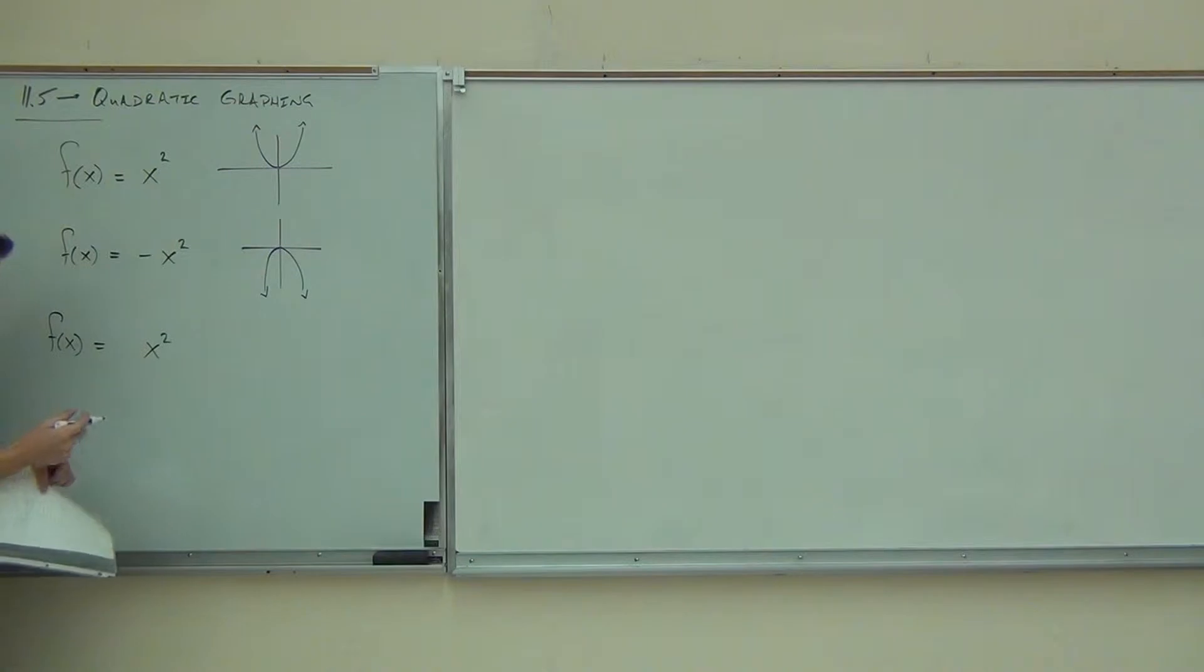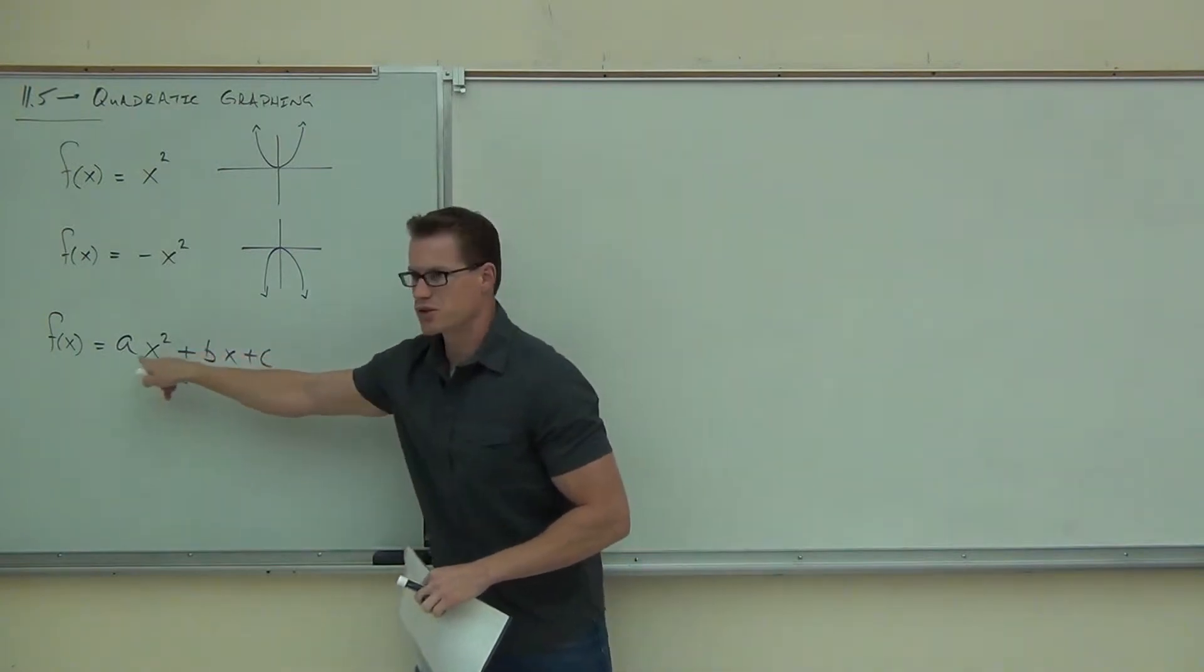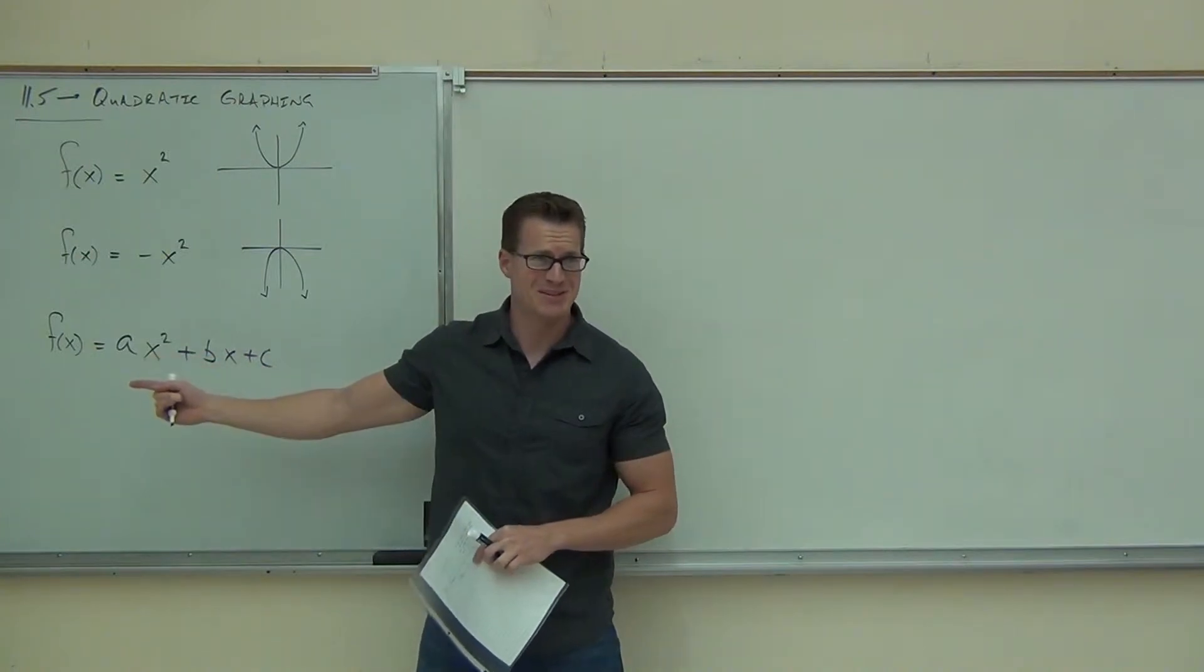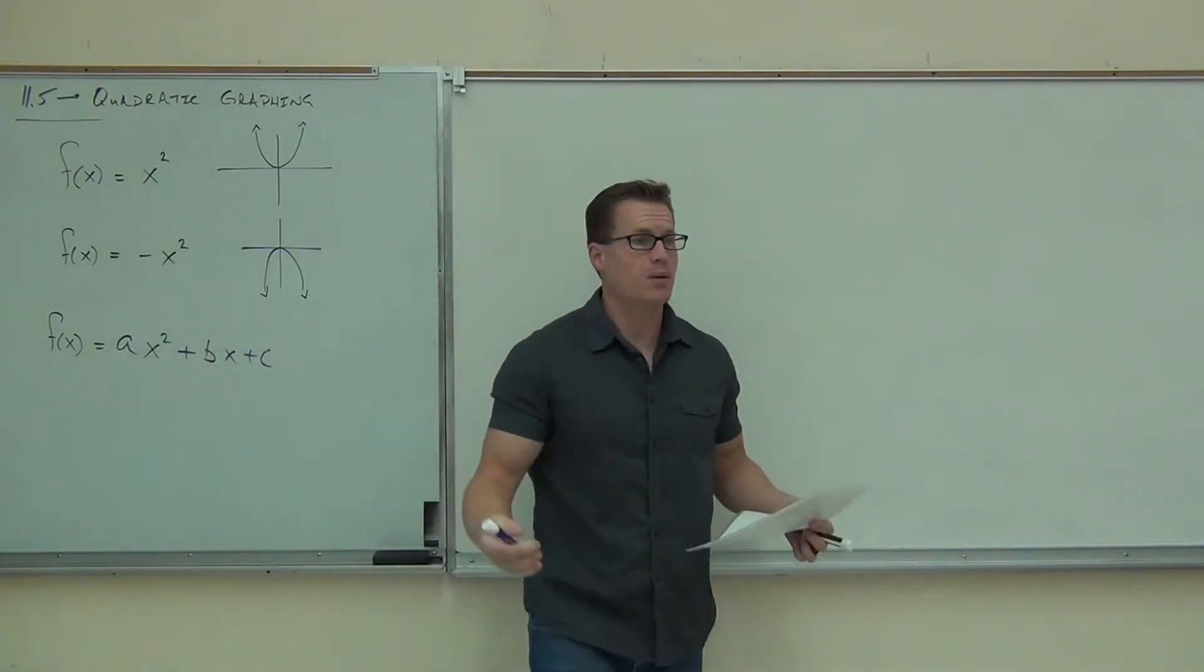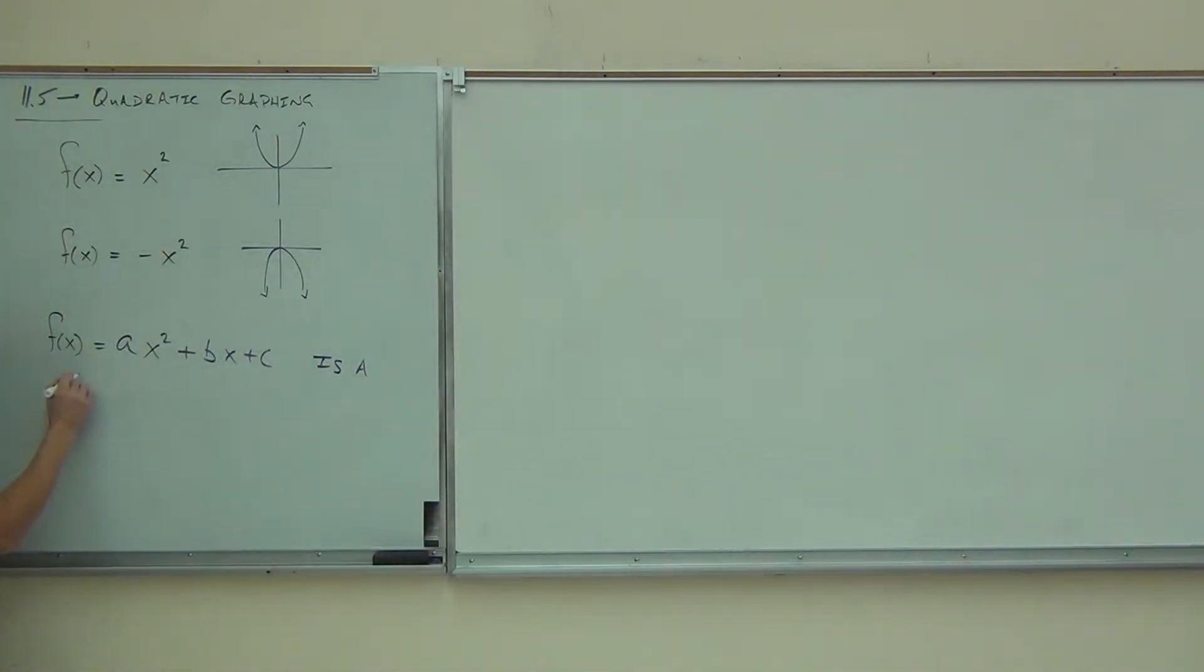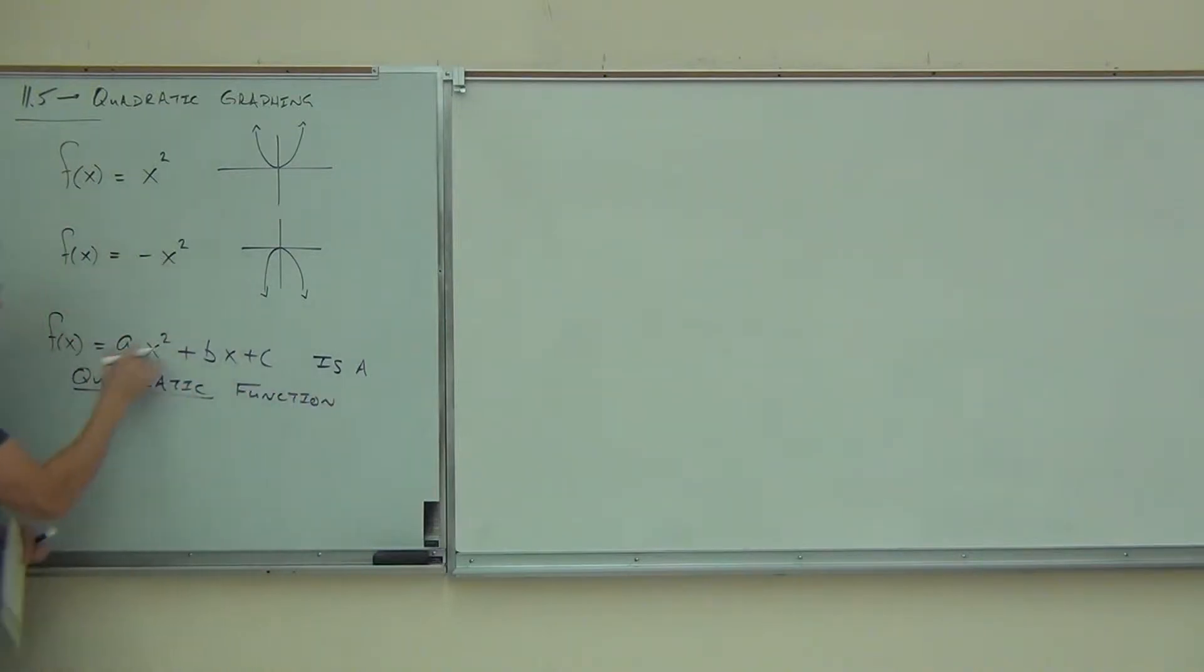And in general, here's what we can do with that. We can say that anything that looks like this, with an ax squared plus bx plus c. Anything of this form where that x squared should stand out to you. Does that stand out to you? Because I have it in a different color. But anything with that square, that is a parabola that we're going to be able to graph. So this right here is a quadratic function. Clearly quadratic because it's of that quadratic form. Clearly a function because we have it in function notation. And the graph will be a parabola.